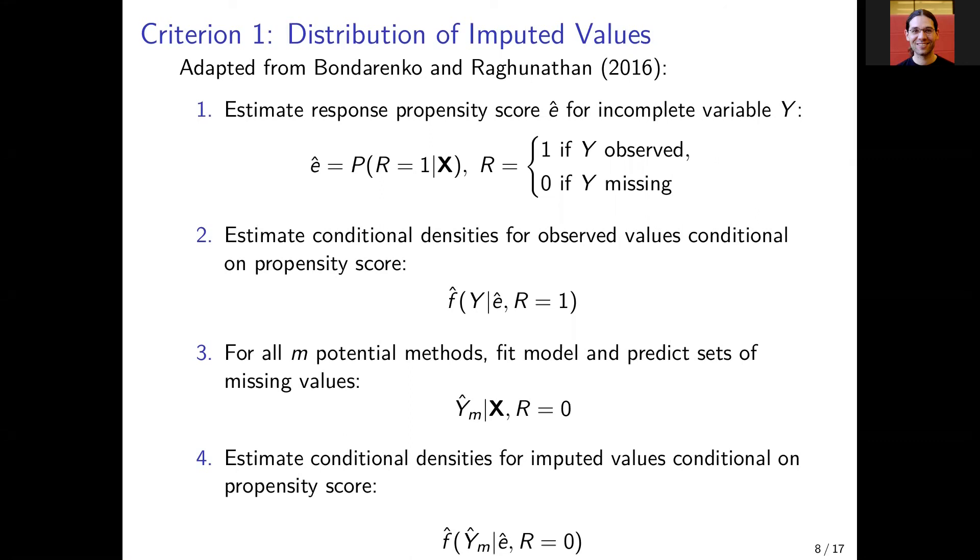And then in the final step four, which is pretty similar to the second step, we estimate conditional densities for the imputed values for each method M conditional on the propensity score.